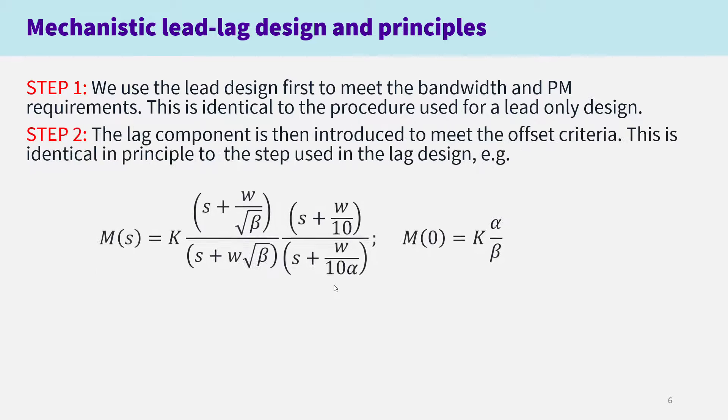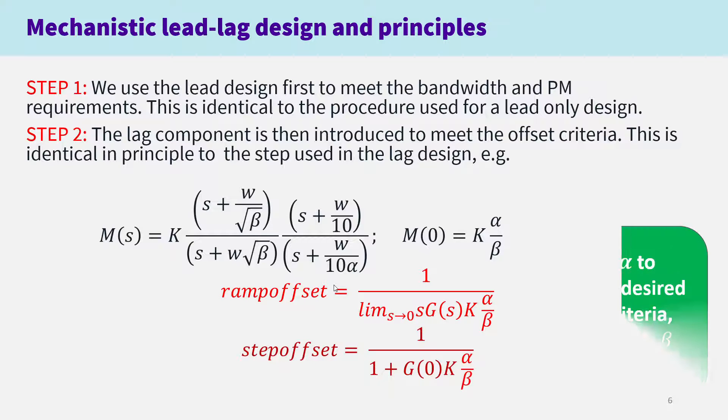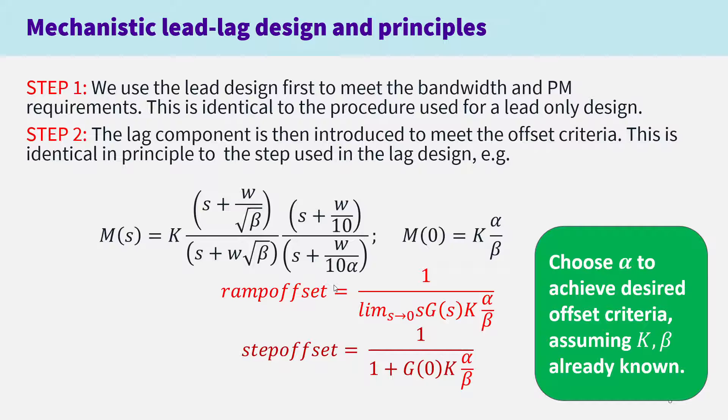Step two: the lag component is then introduced to meet the offset criteria, and this is identical in principle to the step used in the lag design. The equations are modified slightly because your compensator is a bit more complicated. You can define the ramp error offset or the step error offset using very simple formulas which depend on alpha and beta. As you've already done the lead compensator design, K and beta are already defined, so you only have alpha left to choose in order to meet your offset criteria.